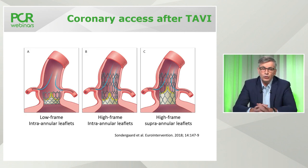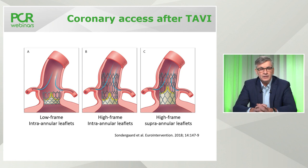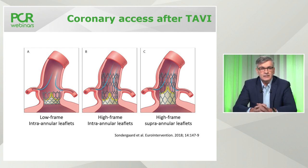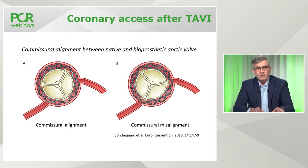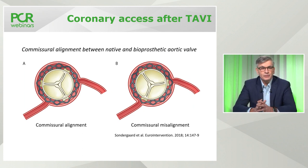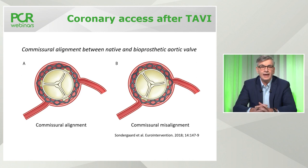Here are all the TAVI valves available today. They divide into three groups: those with a low stent frame with an internal position of the leaflets, and those with a high stent frame where the leaflets can be in an internal or supraannular position. Accessing the coronary arteries is possible but can be difficult without experience, and when implanted the valve may sit with commissure alignment or misalignment — with the post in front of the entrance to the coronary arteries.